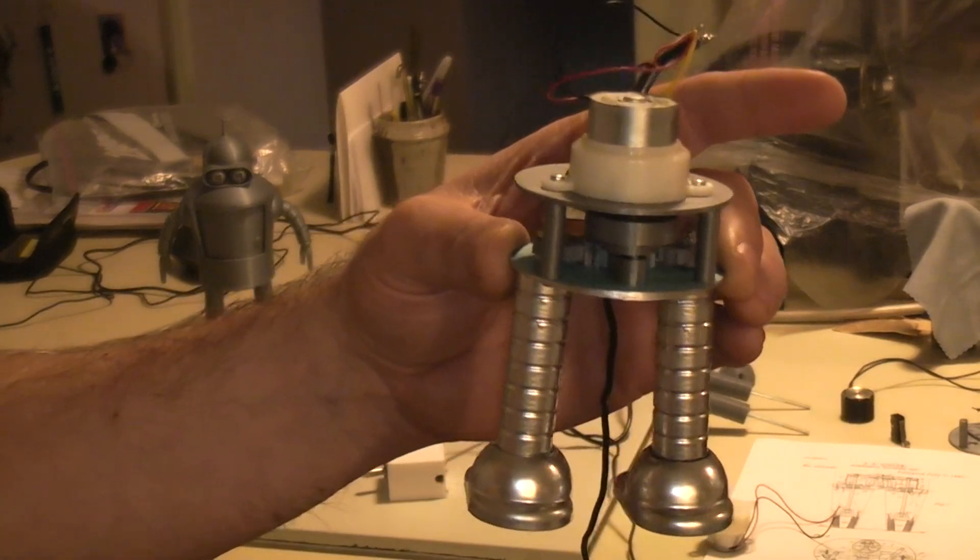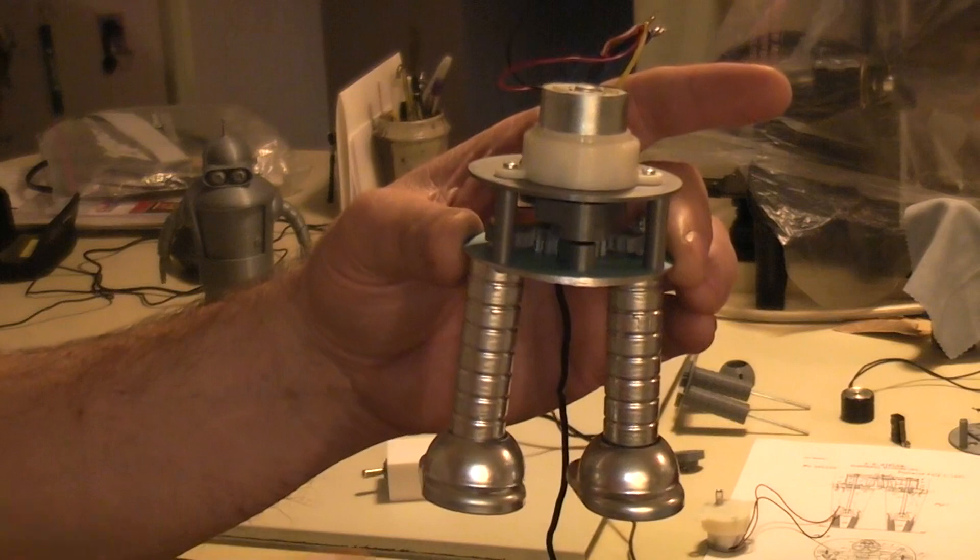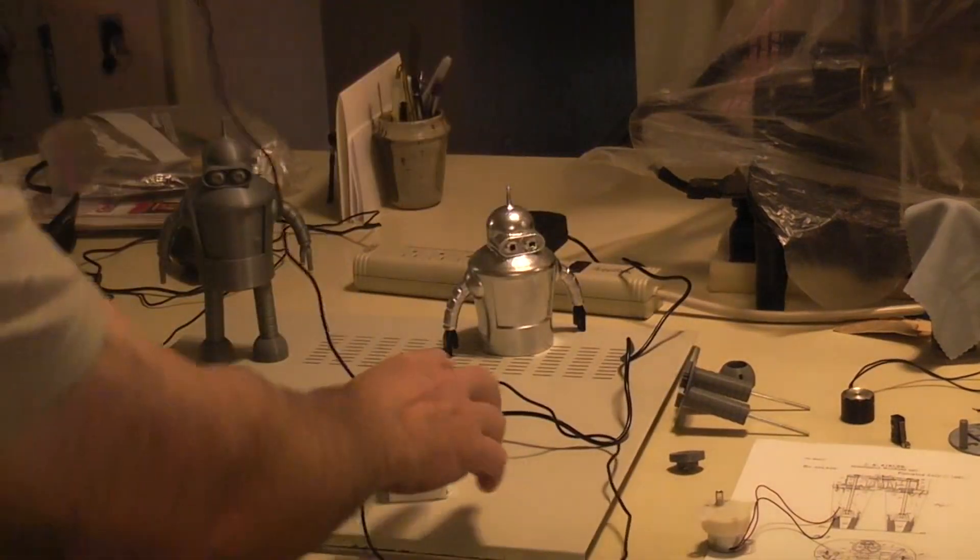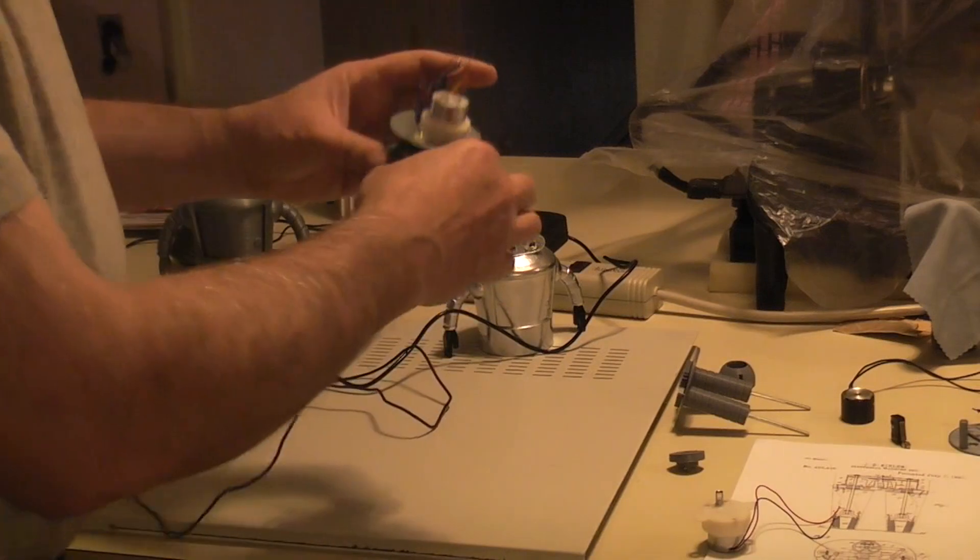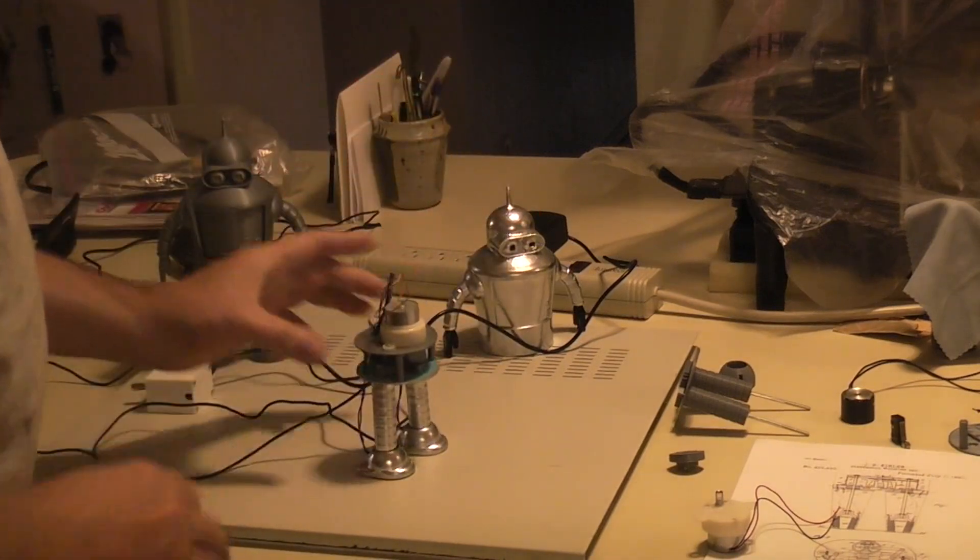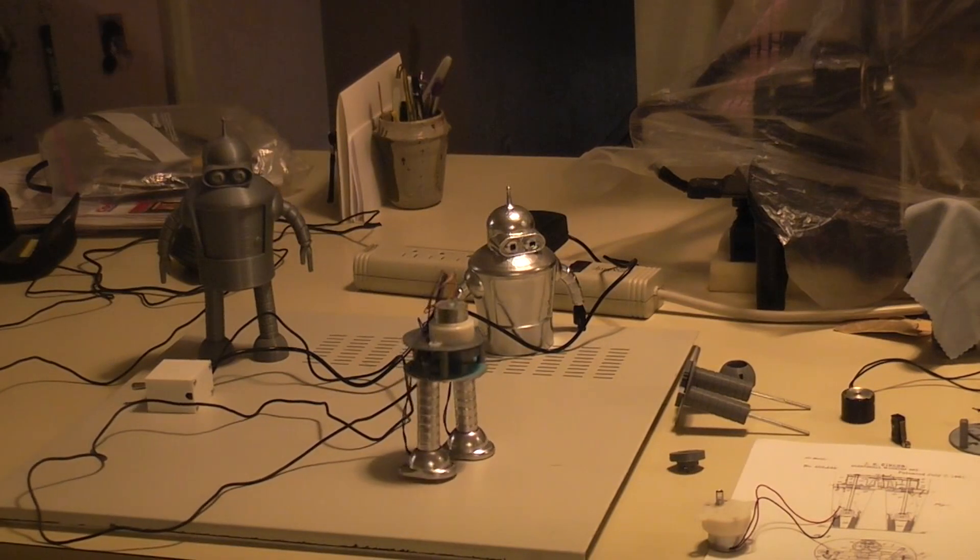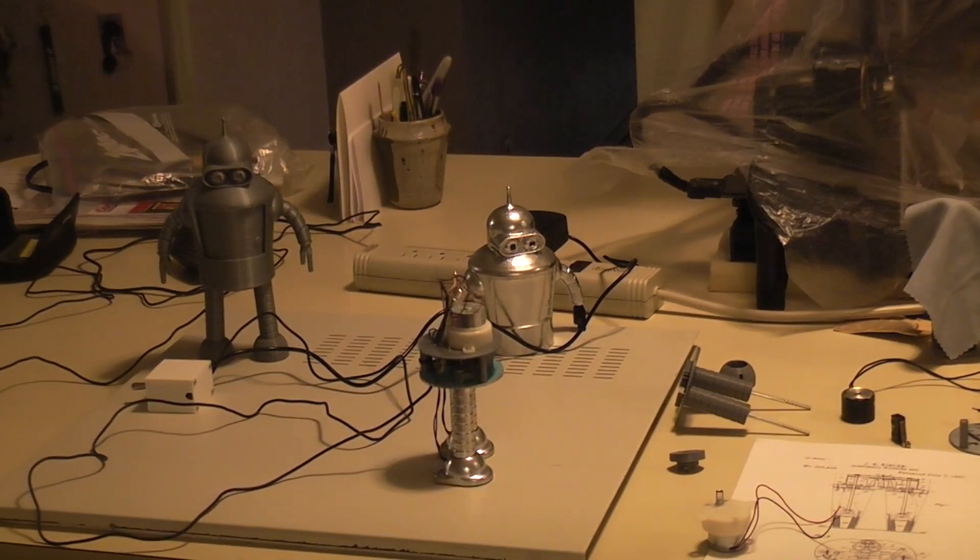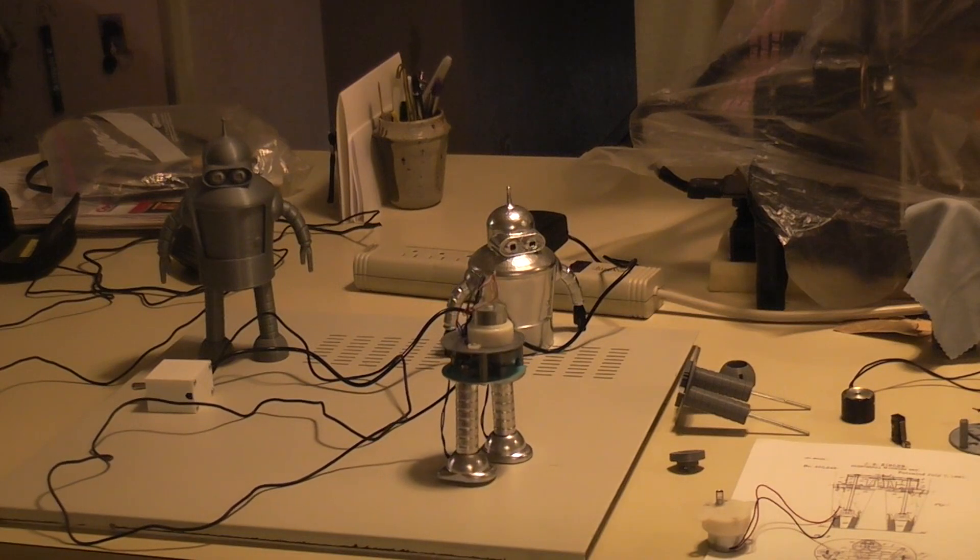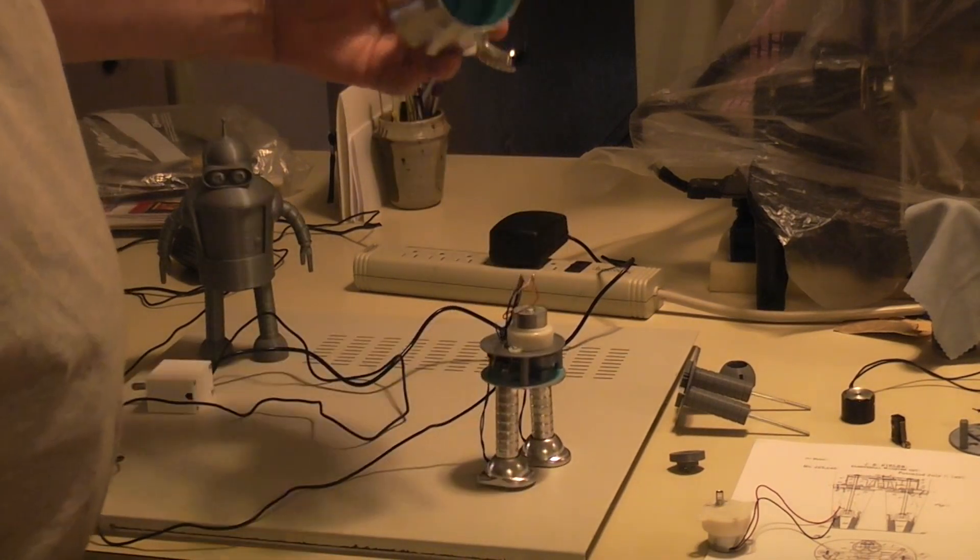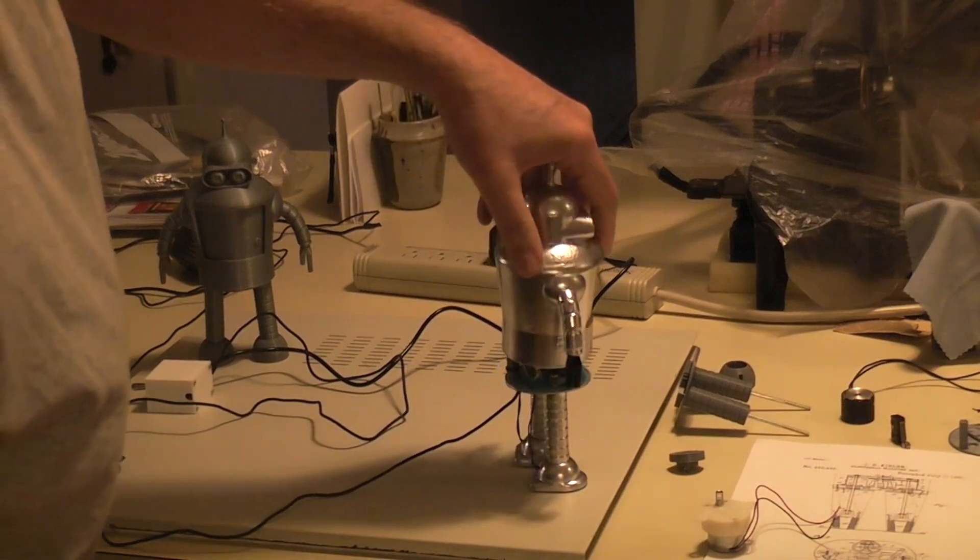I made ones where they turn left, right, forward, backwards - you can do all those different things. It's just a very simple little building block that you could design your own body for. Put your own body on there, it doesn't have to be the one that I did that's loosely based off Bender. But it could be anything you like. The body just slips down on there.